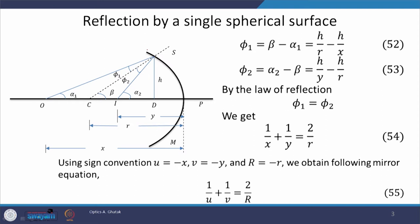Let us first talk about reflection by a single spherical surface. In this picture, this curved surface represents a mirror and our object is situated at point O. It starts from point O, goes to the surface of this reflecting mirror, and then after getting reflected, it falls at point I where it forms the image. C is the centre of the spherical mirror. Object O is situated at a distance x from point P, and the image is formed at a distance y from point P. The radius of curvature of this spherical surface is small r.